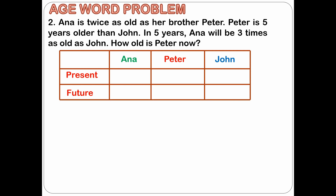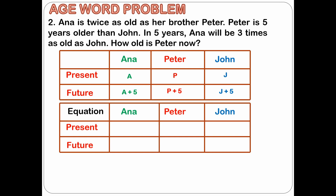We will call Anna's present age as letter A, Peter as letter P, and John as letter J. In the future, that is 5 years from now, Anna's age will be A plus 5, Peter's age will be P plus 5, and John's age will be J plus 5. Now let's put another table to write equations for the present and future. At present, Anna is twice as old as Peter, so A is equal to 2P. Peter at present is 5 years older than John, so P is equal to J plus 5.